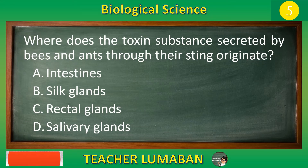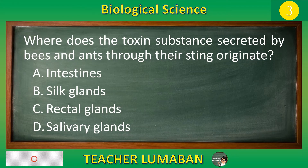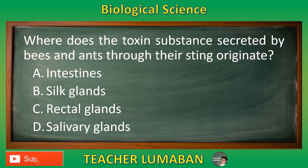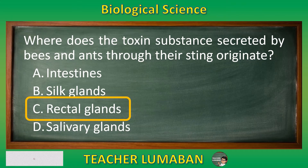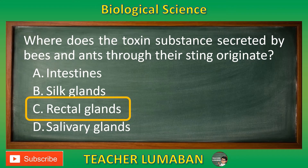5, 4, 3, 2, 1. The correct answer is Letter C: Rectal glands. The toxin substance secreted by bees and ants through their sting originates from their rectal glands.